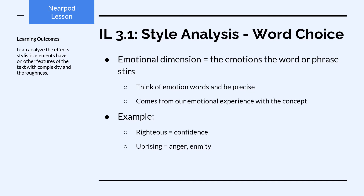Next, the emotional dimension. This is another part of a word's connotation — it is the emotions that the word or phrase stirs. Think of all the various emotion words we learned when studying pathos appeals, and always be very precise with your emotional definitions. The emotional dimension comes from our emotional experiences with whatever concept is behind that word or phrase. When I think of the word 'righteous,' I feel the emotion of confidence. When I see the word 'uprising,' I feel anger and enmity. This largely has to do with our prior experiences with those words.